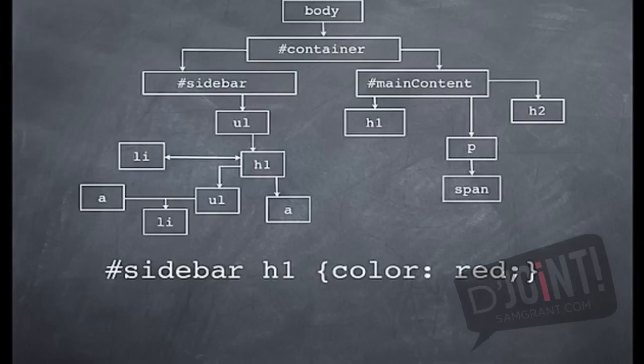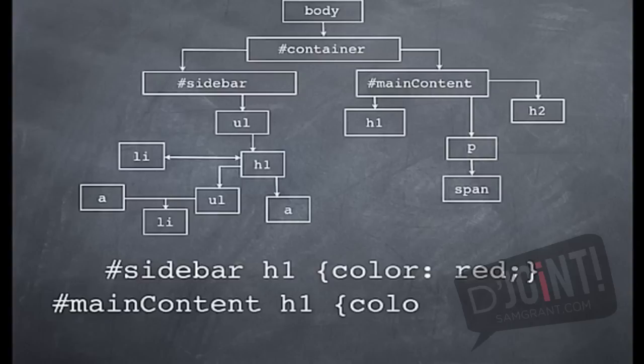Now to affect the information in the main content area, you would write the information, so main content, then H1, and then the color green.